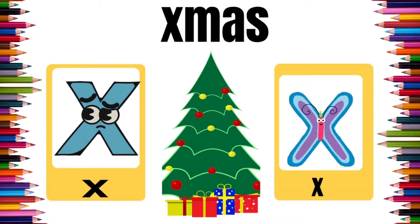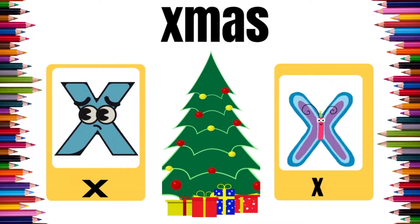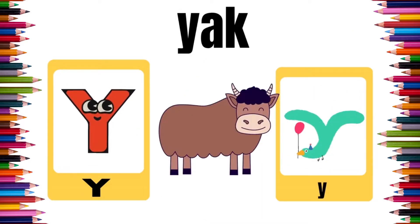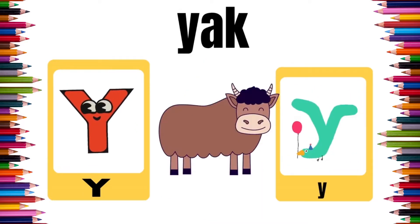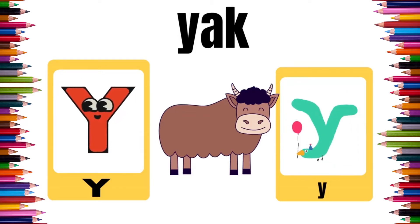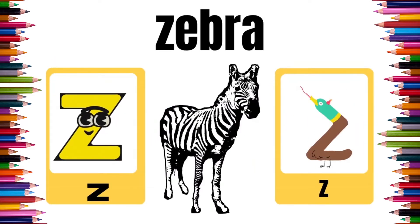X is for Xmas. X, X, Xmas. Y is for Yark. Y, Y, Yark. Z is for Zebra. Z, Z, Zebra.